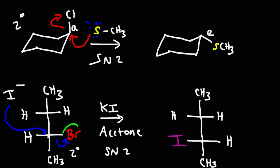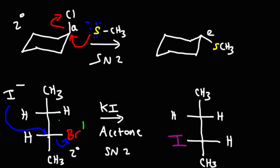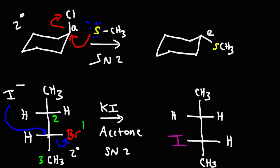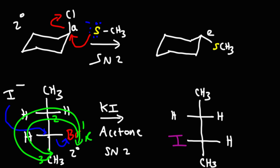This is group number one, this whole group is number two, and this is number three. Whenever hydrogen is either on the left or right side in a Fischer projection, you treat it as if it's in the front, which means we're going to reverse it. So one to two to three gives us S, but once we reverse it we get R.